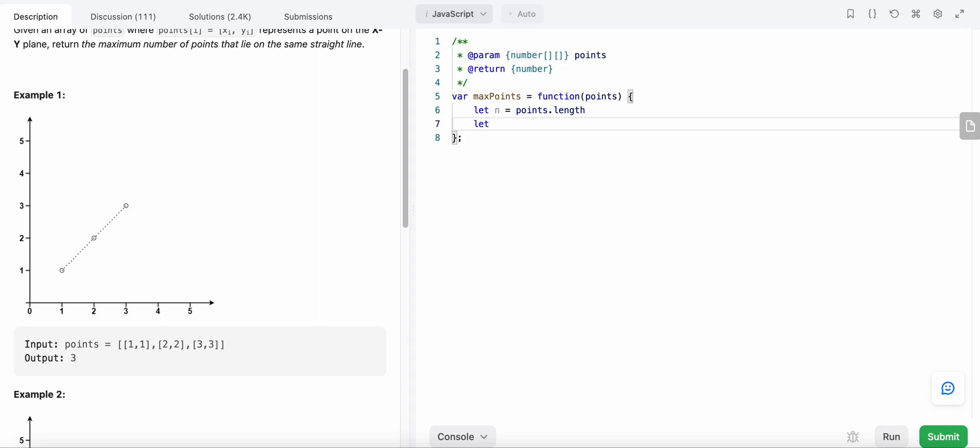Let us define our slope function. What do we need? We need two points, p1 and p2. Let x1, y1 be the coordinate of point p1, and similarly x2, y2 is the coordinate of p2. Now we